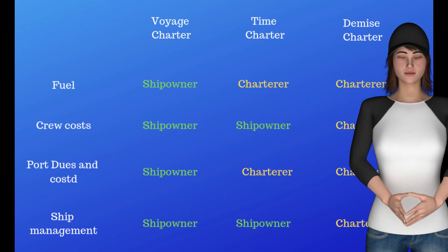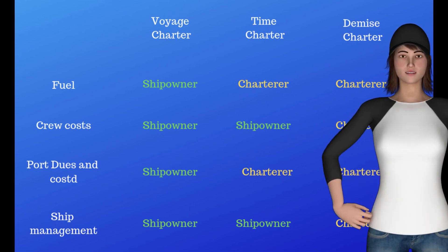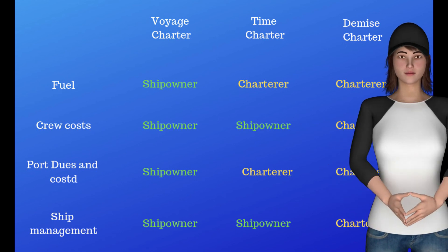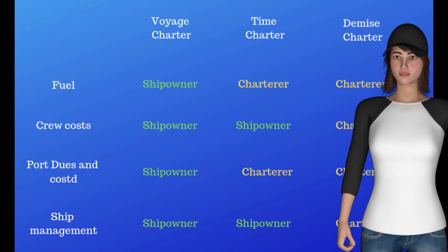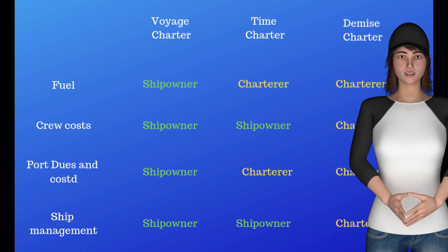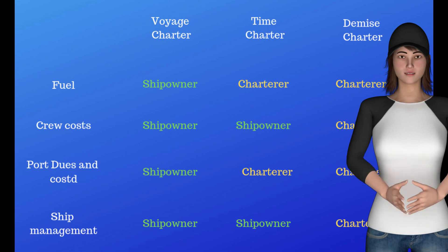Three: In a voyage charter, the charterer hires the vessel for a single voyage, but the ship owner provides the master, crew, bunkering and supplies. The route is pre-arranged and the charterer has little scope to interfere with the program.